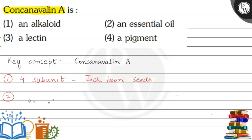The most important property of Con Canavalin A is that it is a type of secondary metabolite. Metabolites are intermediates or products of different metabolic reactions, and secondary metabolites are non-essential metabolites — if they are absent, it would not cause any immediate effect on the organism in which they are produced.